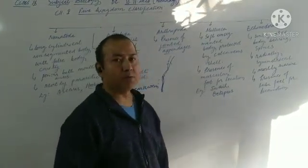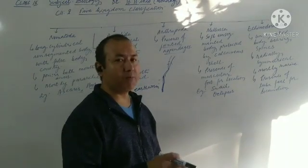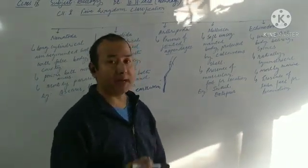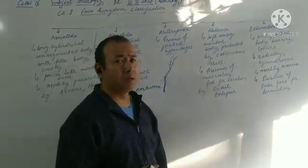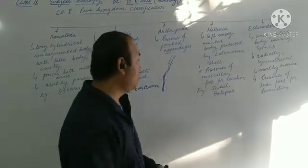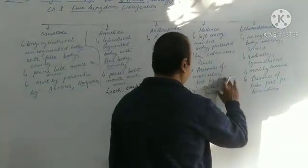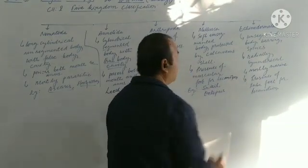Then again, after that, muscular foot. With the help of muscular foot, they usually move from one place to the other. Presence of tentacles. These are here. Only two characteristics I have mentioned here. Presence of muscular foot for locomotion.